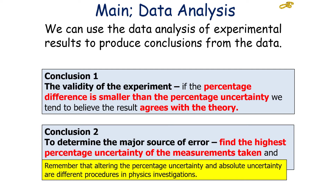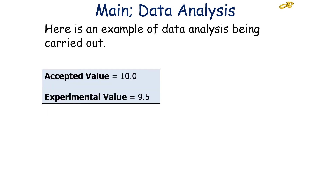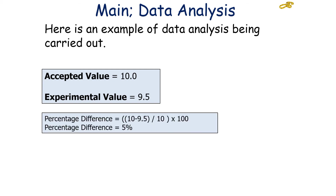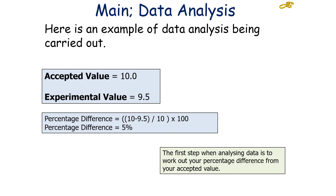Let's look at an example of how you can analyse data from values collected in a scientific investigation. Say the accepted value is 10.0 and the experimental value you have worked out is 9.5. The first step is to work out the percentage difference from the accepted value. The percentage difference is the difference between the accepted value and the experimental value, divided by the accepted value, times by 100. So it would be 10 minus 9.5, which is 0.5, divided by 10, times by 100, which equals 5%.